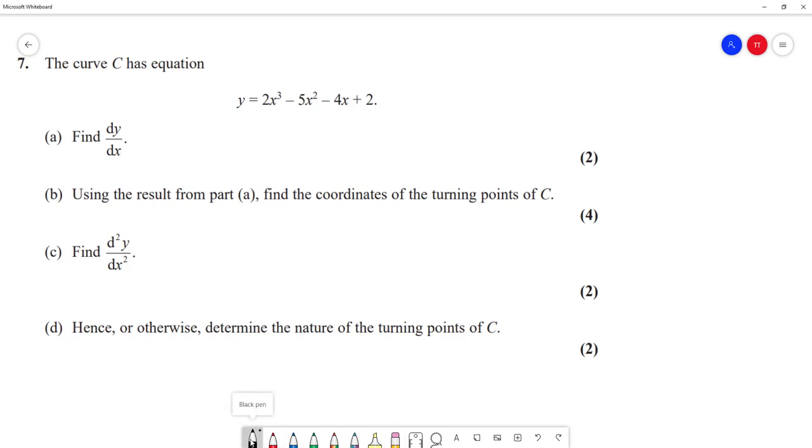We are going to differentiate this to find dy/dx. Differentiate it term by term: 2 times bring the 3 down gives 6x². Minus 5 times bring the power down, 2x to the power of 1, gives minus 10x. Then 4x differentiated is simply 4, so minus 4. The constant differentiated becomes zero. So now we get 6x² - 10x - 4.